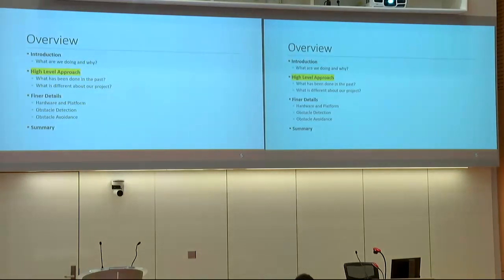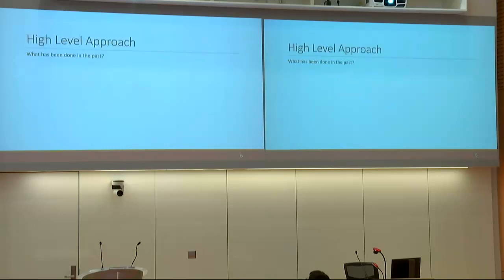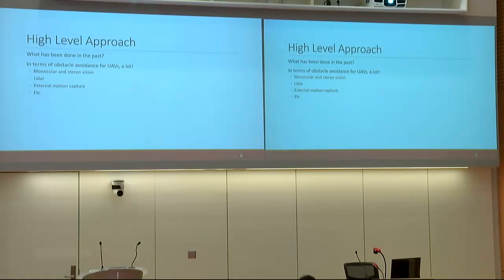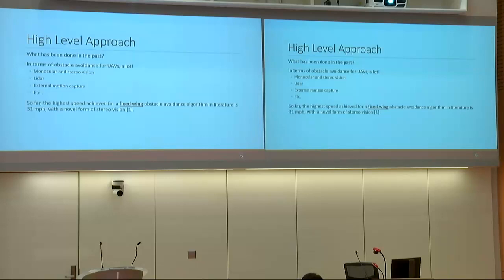Moving on to the high-level approach: a lot has been done in the past in terms of obstacle avoidance on UAVs. Many previous projects have taken advantage of systems such as monocular and stereo vision, LIDAR, and motion capture to detect and avoid obstacles. The current state of the art comes from a paper from MIT where they have a fixed-wing obstacle avoidance algorithm avoiding tree branches at 31 miles per hour with a novel form of stereo vision.